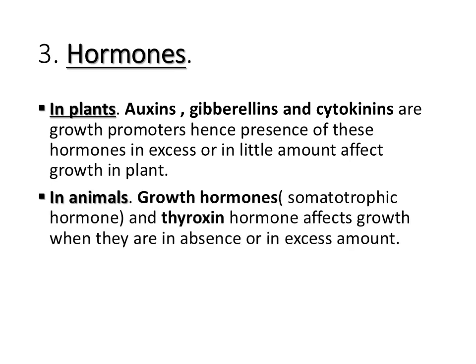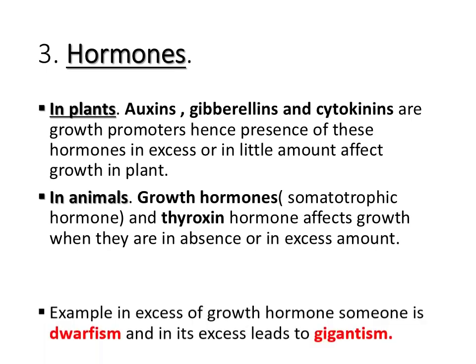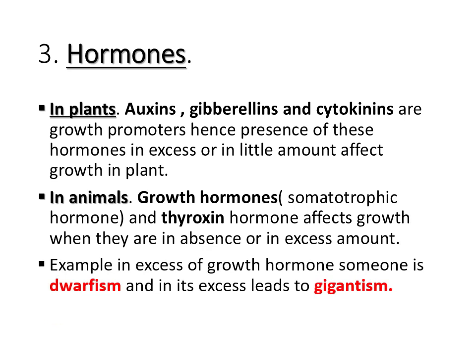In animals, we have the growth hormone called somatotrophic hormone, which comes from the anterior pituitary gland. Somatotrophic hormone has a significant effect on growth. We also have thyroxine hormone from the thyroid gland, which affects growth by increasing metabolic activity in the body. The effect of these hormones can be seen when they are in excess or absent. When absent, it leads to abnormal growth; when in excess, it also leads to abnormal growth. The two conditions are dwarfism, which is due to a deficiency of growth hormone, and gigantism, which is due to an excess of growth hormone.